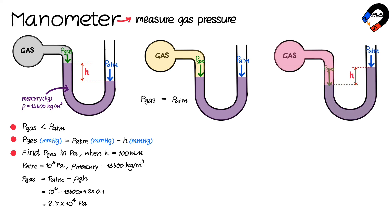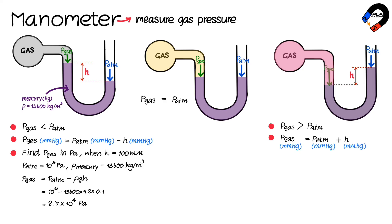Therefore, the gas pressure in millimeters of mercury equals the atmospheric pressure in millimeters of mercury plus h millimeters of mercury.